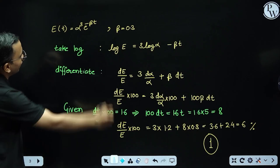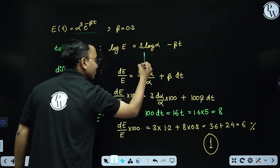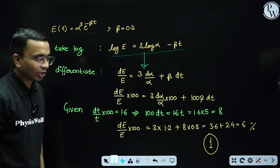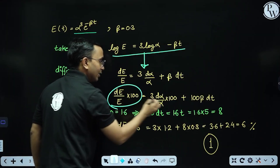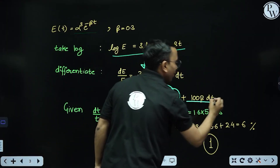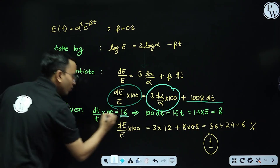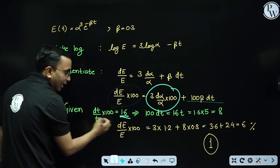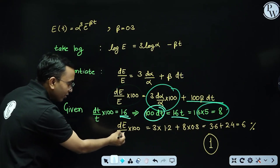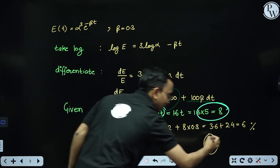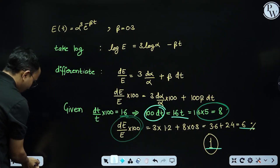Take log and differentiate. After differentiating, multiply with 100 — this gives the error in E and error in alpha. I got 100β·dT, where dT is the error in T. From the given data, 100·dT becomes 1.16 into T, and T is 5, so this becomes 8. Putting the values, the percentage error in E comes out to be 6%, which is option one.